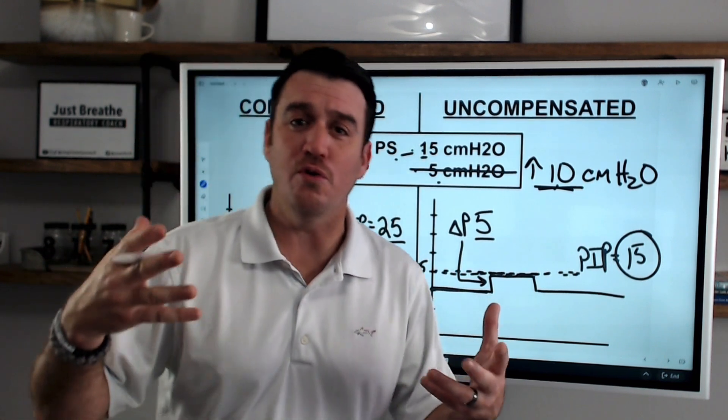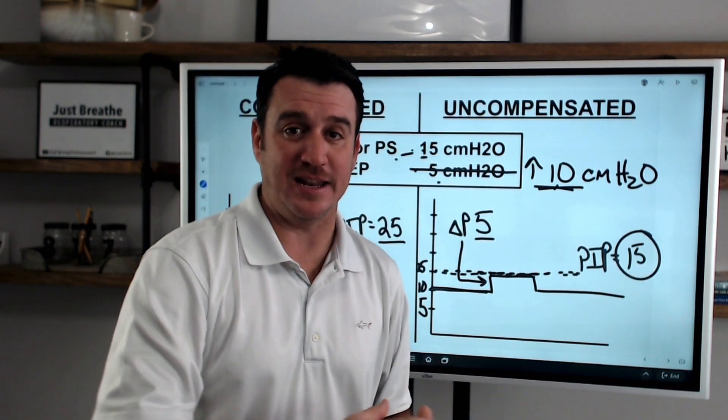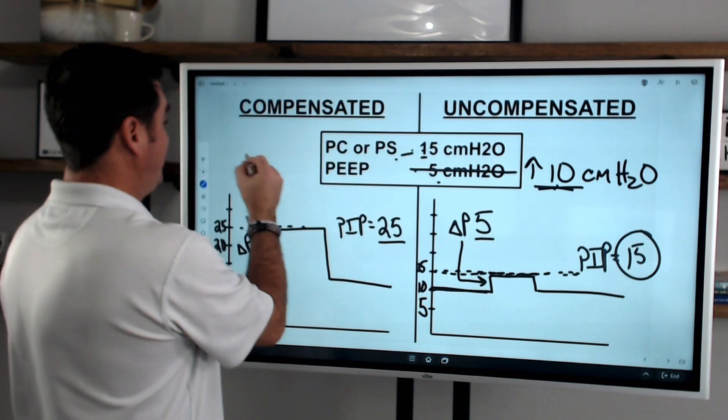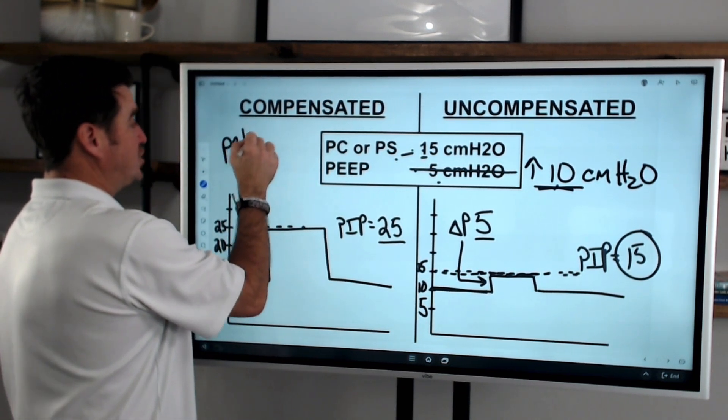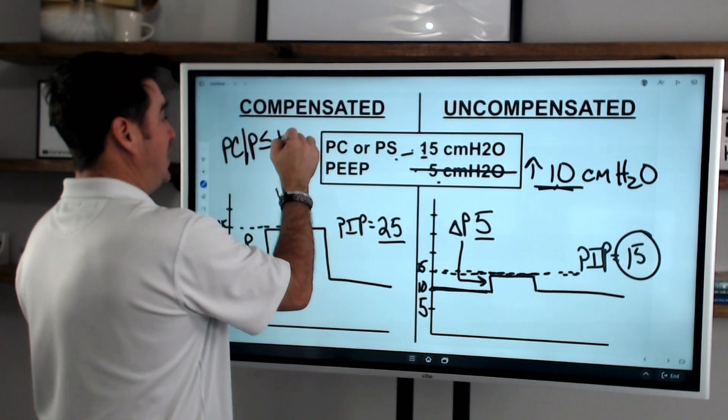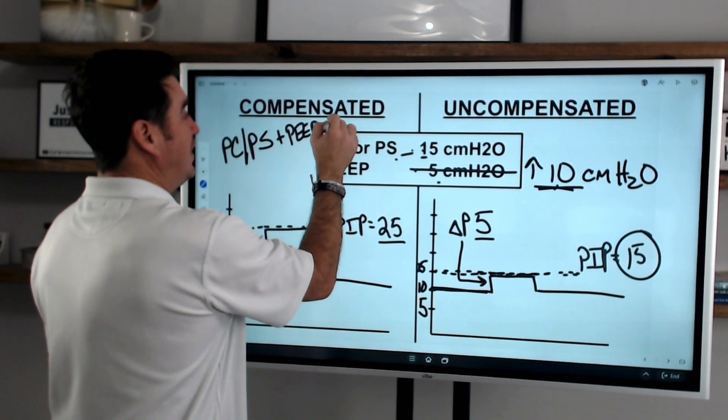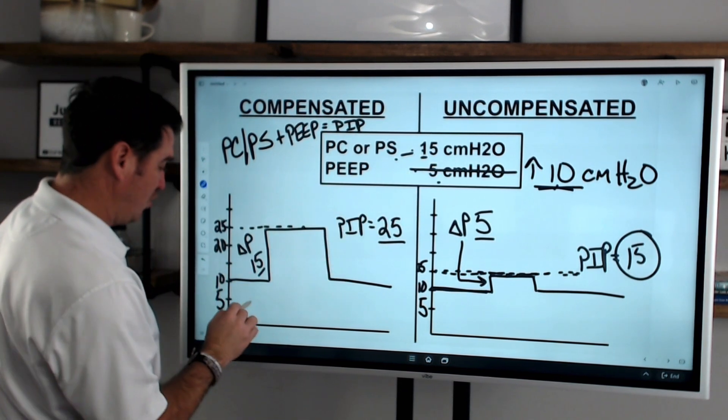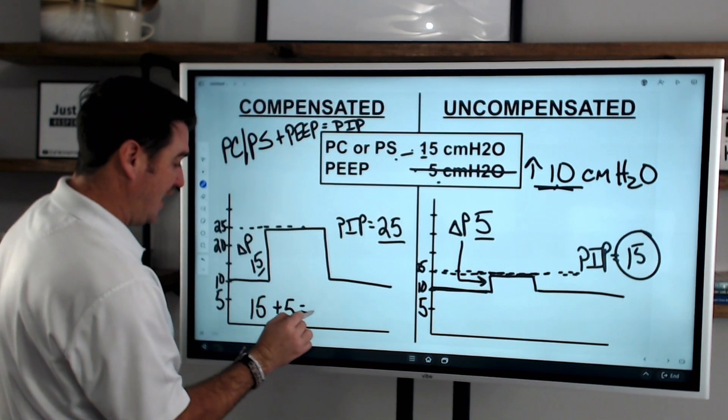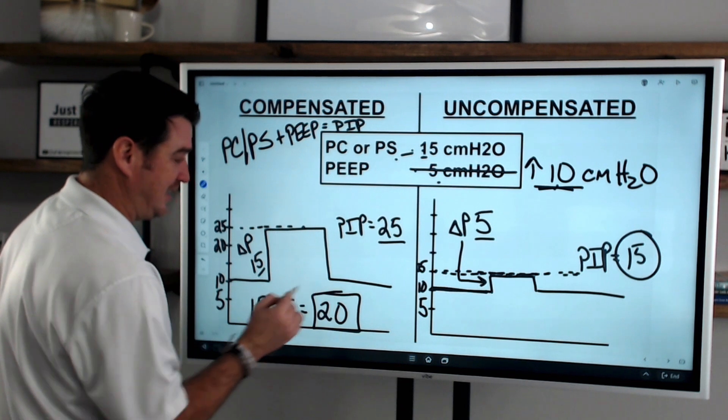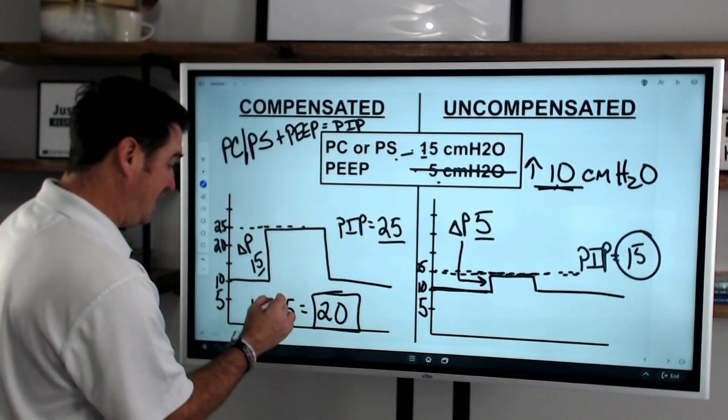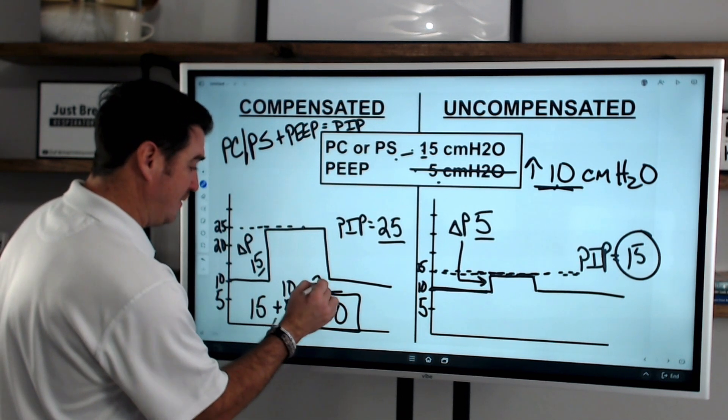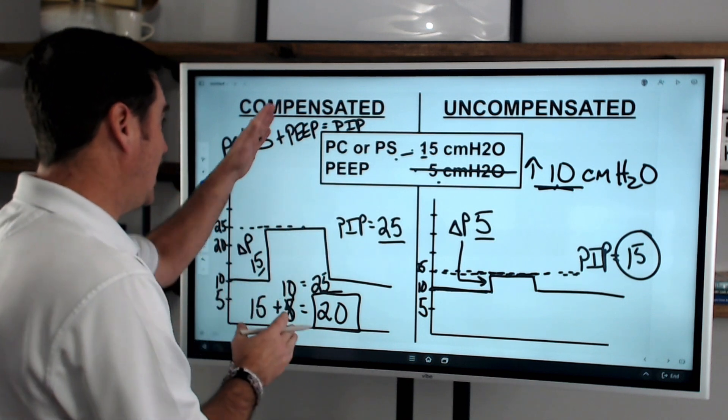So how do you know if your ventilator is compensated or uncompensated? Well, the answer is very simple. If it is compensated, pressure control or pressure support plus PEEP will equal your PIP. Okay? So let's say we're on a pressure control of 15 and a PEEP of 5, then our PIP will be 20. We know this. If we raise our PEEP to 10, then our PIP will go up to 25. That's the way compensated works. Pressure control or pressure support plus your PEEP will equal your PIP.